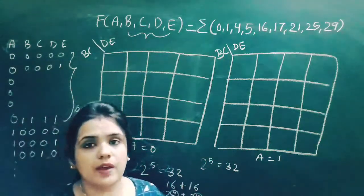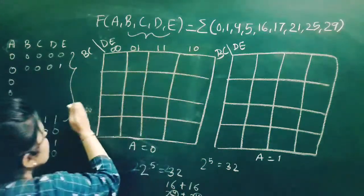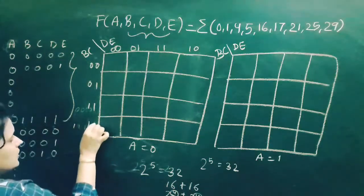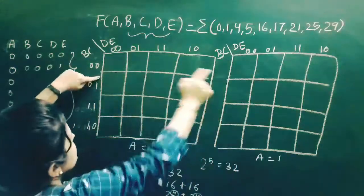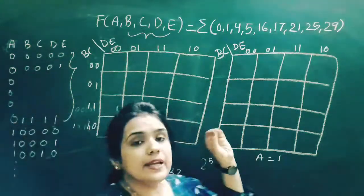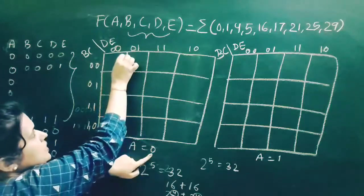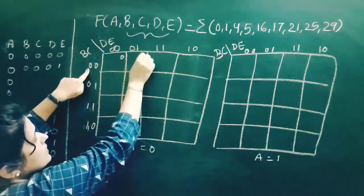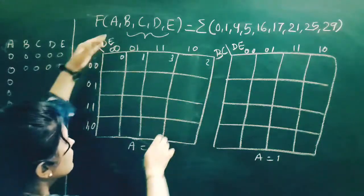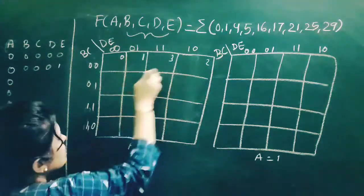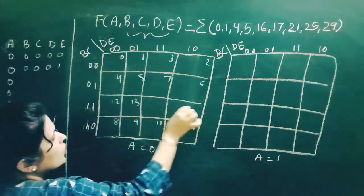Now, how do we write minterms for the 4 variables b, c, d, e? In the first K-map where a=0, we write 0,0,0,0,0 equals 0; 0,0,0,0,1 equals 1; 0,0,0,1,1 equals 3; and so on. Filling in values: 0, 1, 2, 3, 4, 5, 6, 7, 8, 9, 10, 11, 12, 13, 14, 15.